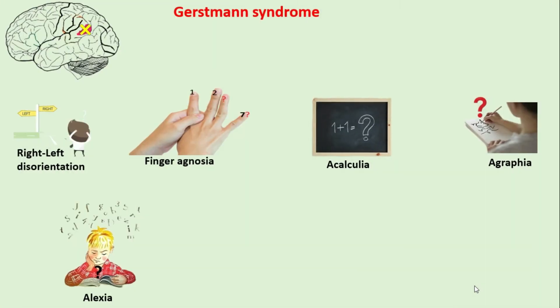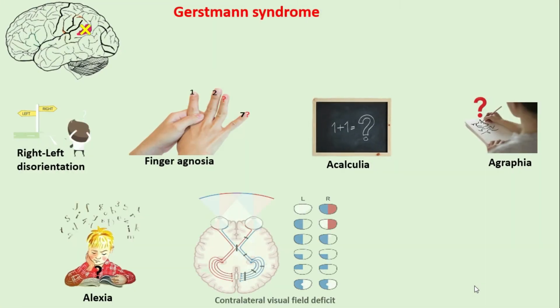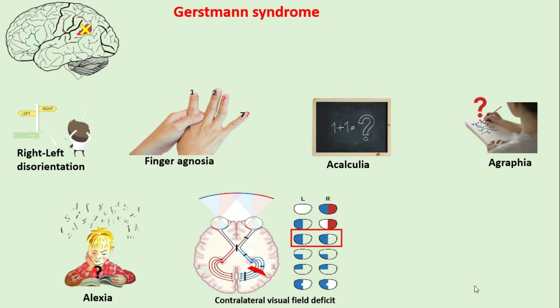There can be contralateral visual field deficits including quadrantanopia or hemianopia, due to involvement of the optic radiations. Contralateral hemiplegia can also be seen.